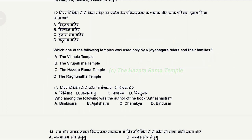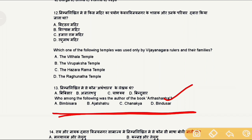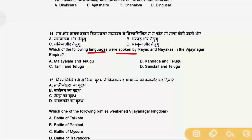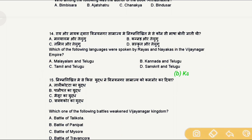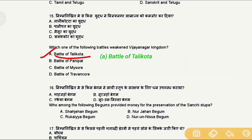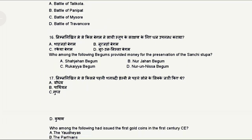Question 13: Who was the author of the book Arthashastra? The correct answer is option C, Chanakya, who is also known as Kautilya. Question 14: Which language was spoken by the Rayas and Nayakas in the Vijayanagara empire? The correct answer is option B, Kannada and Telugu. Question 15: Which battle weakened the Vijayanagara kingdom? The correct answer is option A, the Battle of Talikota, fought in 1565.